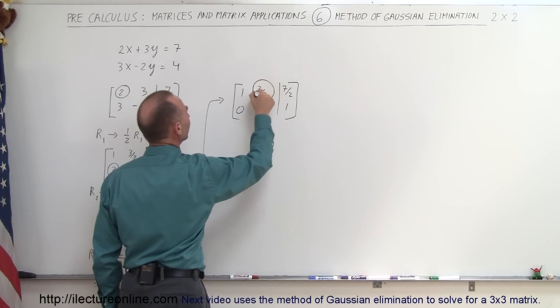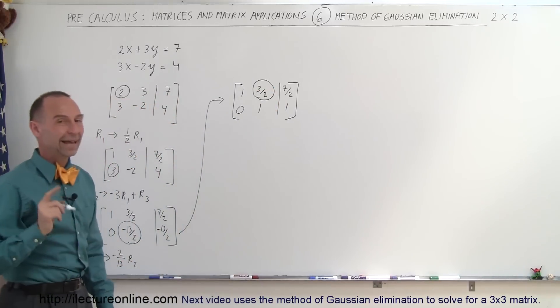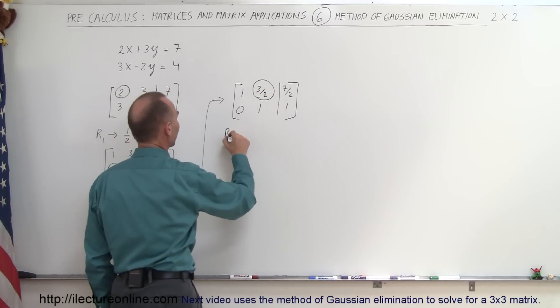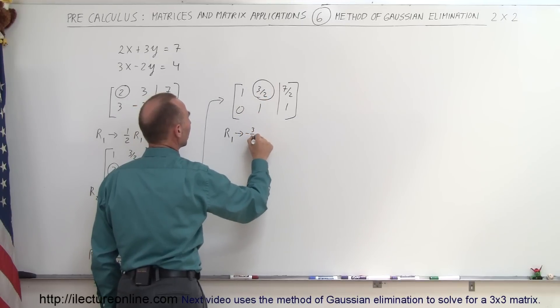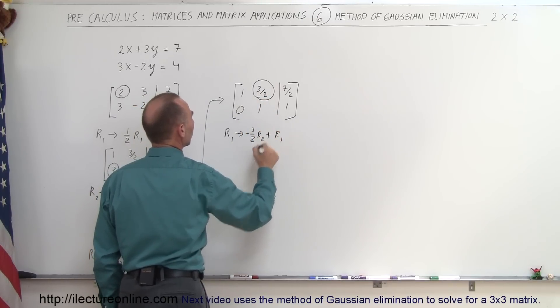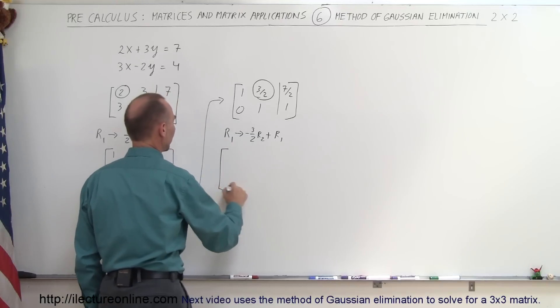So now I have a 1 here. All I need to do now is get rid of this, turn that into a 0. I can do that by taking my first row and replacing it by the negative of that number times the row with the 1 in it and adding it to the original row, row 1.